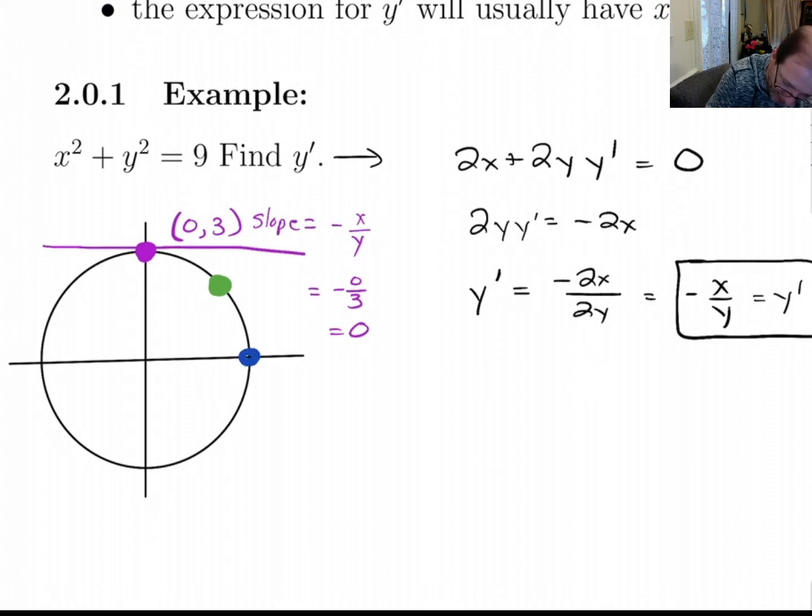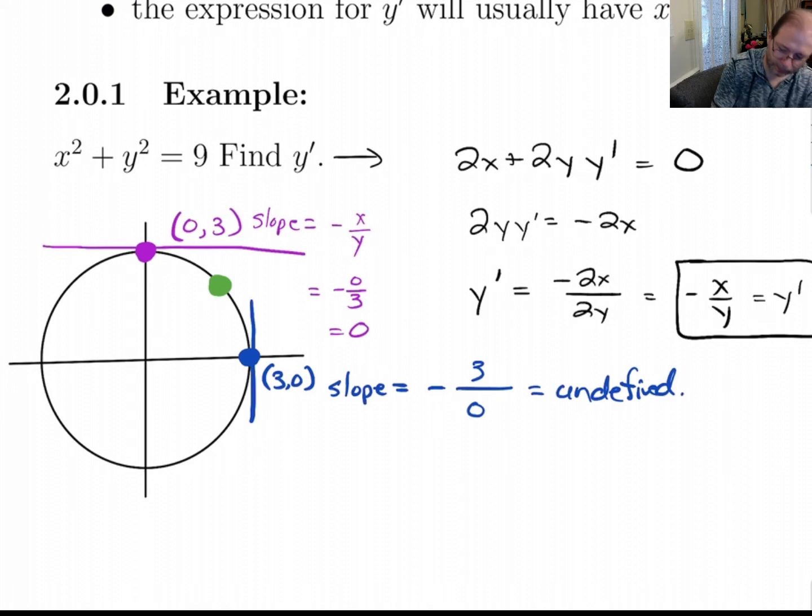If you were to pick this point right here, the slope there would be undefined because it's vertical. And sure enough, if you plug in these coordinates, (3, 0), slope is going to be minus, let's see, x on top. So this is undefined.